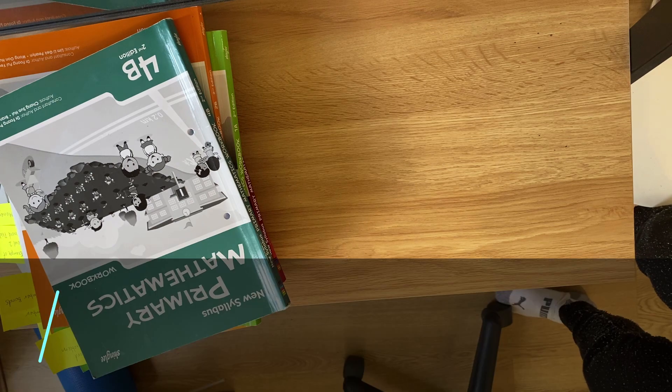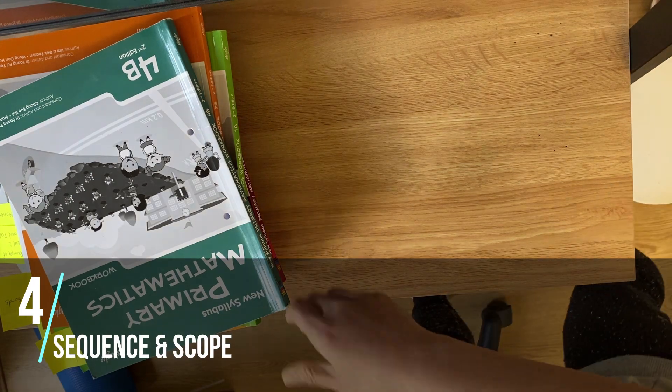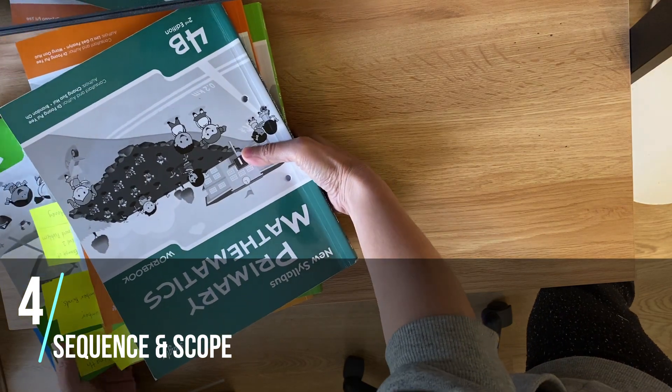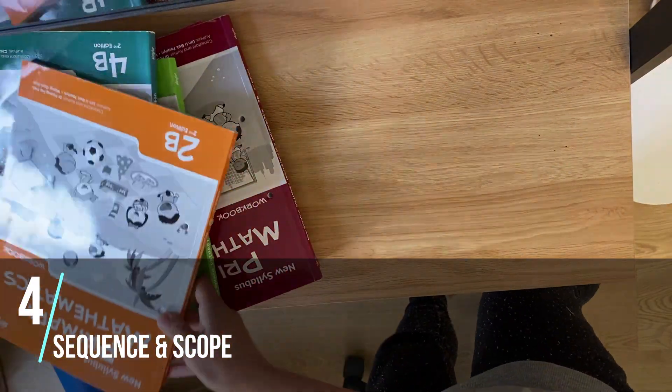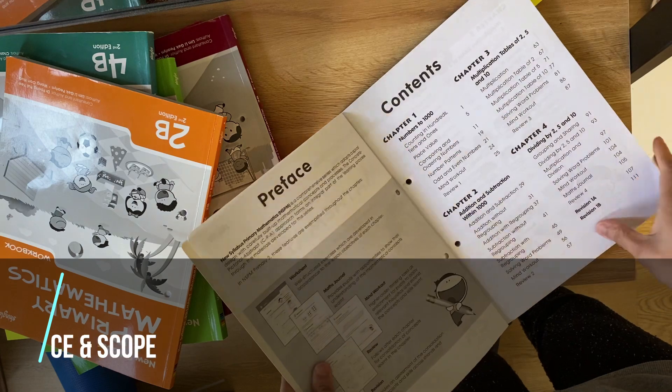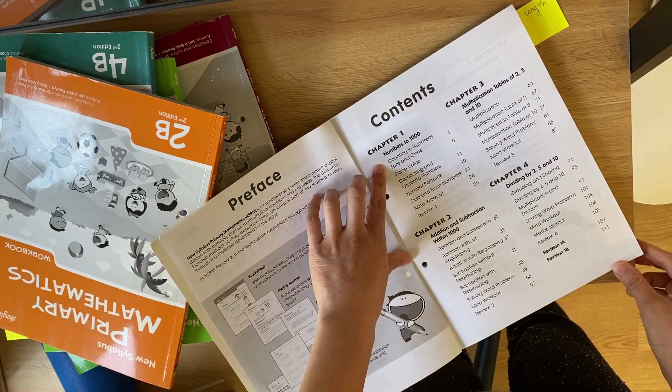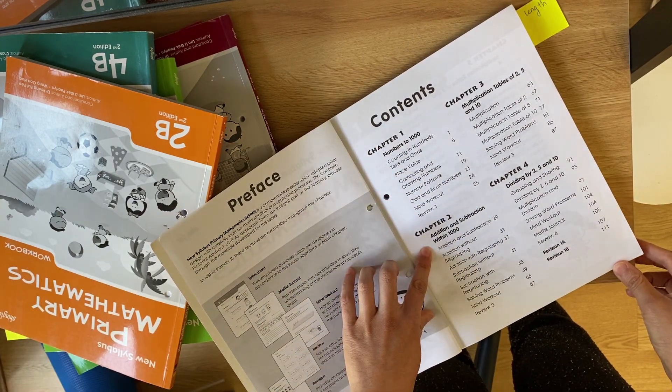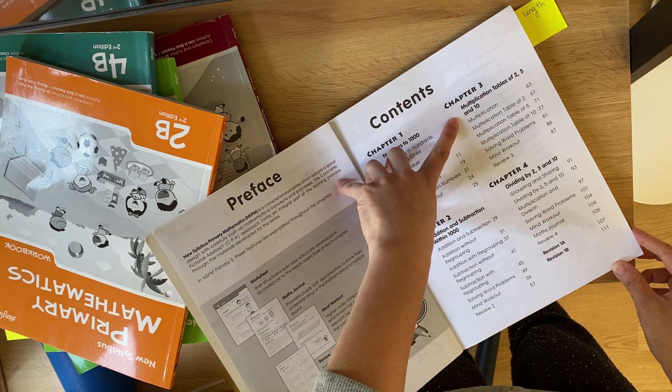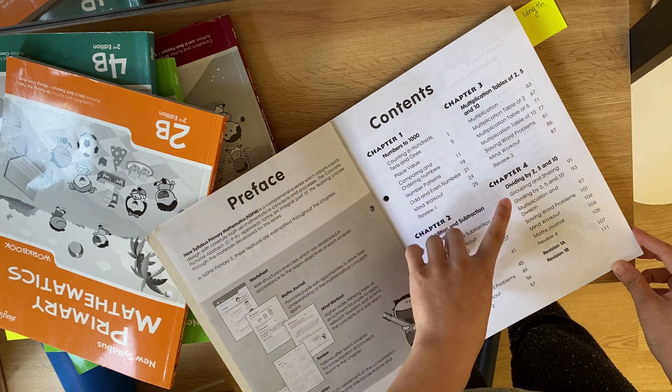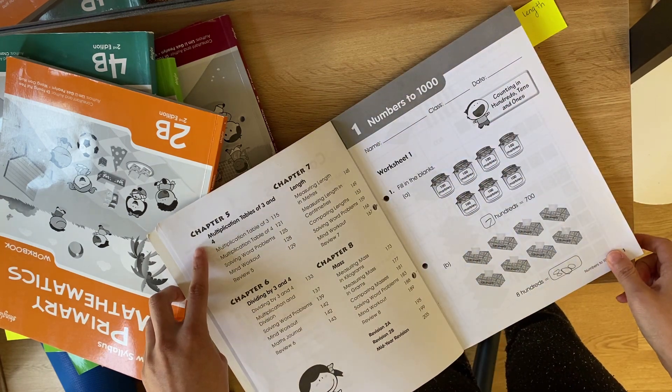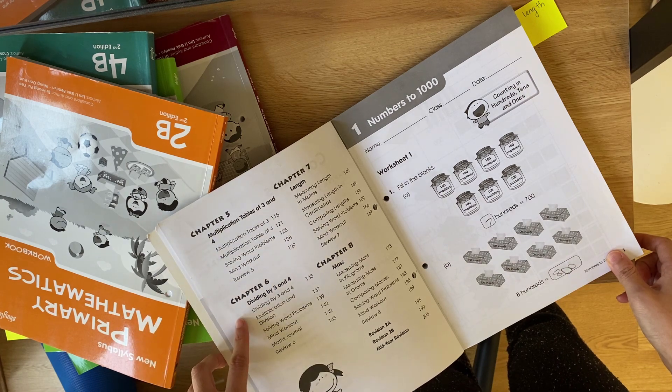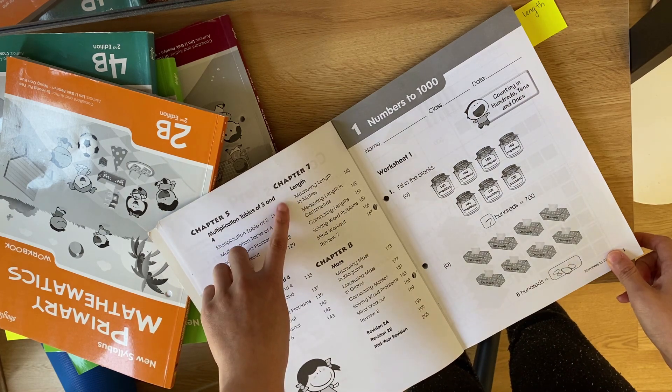Okay, so let's have a look at the sequence and scope. And I'll again show you level two, what they'll cover in one year. So you're covering numbers one to 1,000, addition and subtraction within 1,000, multiplication tables of 2, 5 and 10, dividing by 2, 5 and 10, multiplication tables of 3 and 4, dividing by 3 and 4, length and mass.